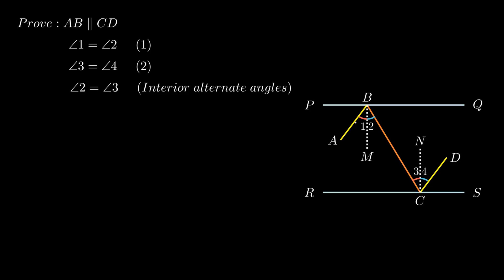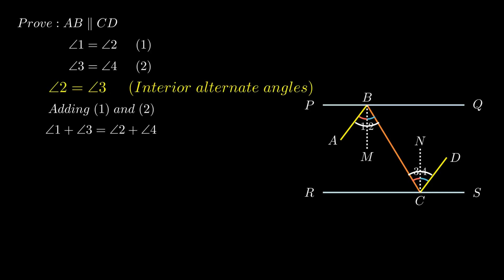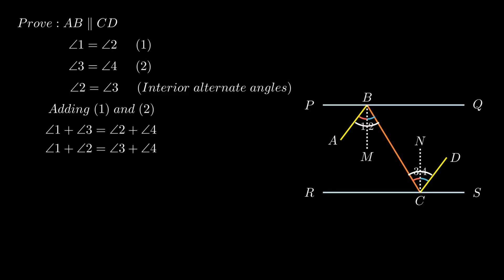To prove ray AB is parallel to ray CD, consider the angles touching these segments. The sum of angle 1 and angle 2 forms angle ABC, while the sum of angle 3 and angle 4 forms angle BCD. Adding equations gives angle 1 plus angle 2 equals angle 3 plus angle 4. Since the interior alternate angles are equal, we conclude that ray AB is parallel to ray CD.